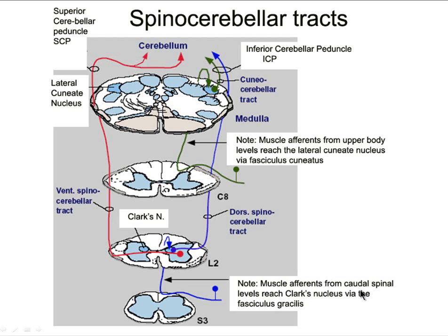Muscle afferents from the caudal spinal cord levels reach Clark's nucleus via the fasciculus gracilis. Clark's nucleus only exists from L2 to C8. So any information coming in below L2 — say from your big toe — has to travel up the fasciculus gracilis to find Clark's nucleus, and then the true dorsal spinal cerebellar tract comes from Clark's nucleus.